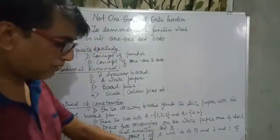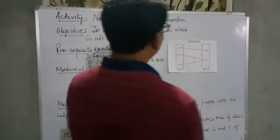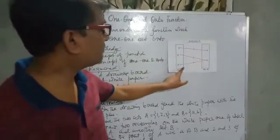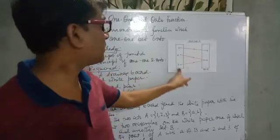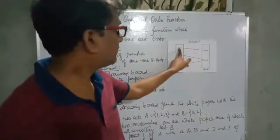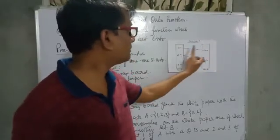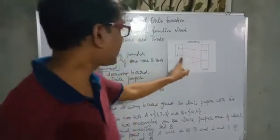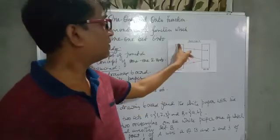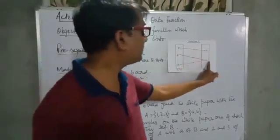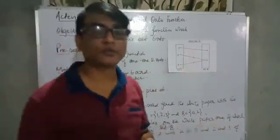Here is the example we are taking. On the white paper, two rectangles are drawn — this rectangle represents set A with elements 1, 2, 3, and this rectangle represents set B with elements a and b. Now join element 1 of set A with element a of set B, join element 2 of set A with element b of set B, and join element 3 of set A with element b of set B.